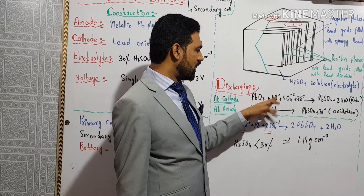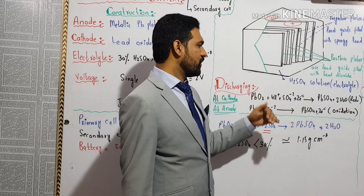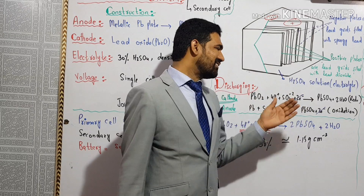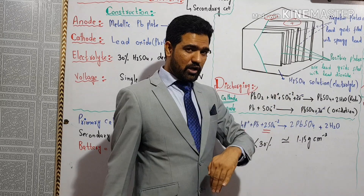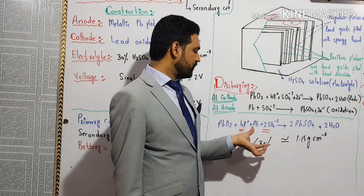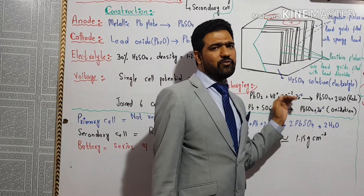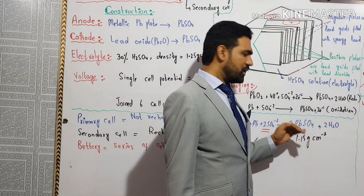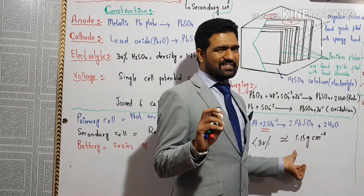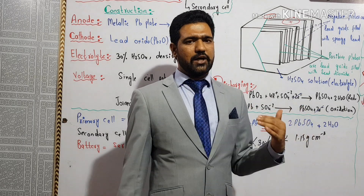During discharge, sulfate ions are used up and lead sulfate is deposited at both the anode and cathode. As a result, the percentage of sulfuric acid drops from 30%, and its density falls from 1.25 down to 1.15 gram per cm³.